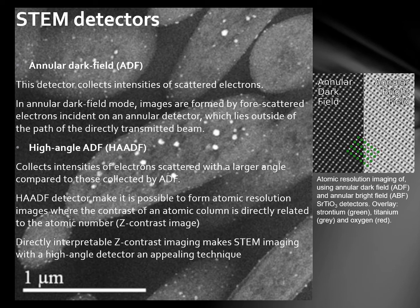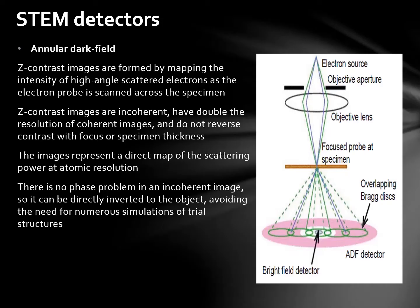Directly interpretable Z-contrast imaging makes STEM imaging with a high angle detector an appealing technique. Z-contrast images are formed by mapping the intensity of high angle scattered electrons as the electron probe is scanned across the specimen. Z-contrast images are incoherent, have double the resolution of coherent images, and do not reverse contrast with focus or specimen thickness. The images represent a direct map of the scattering power at atomic resolution. There is no phase problem in an incoherent image, so it can be directly inverted to the object, avoiding the need for numerous simulations of trial structures.